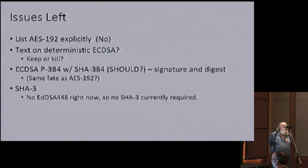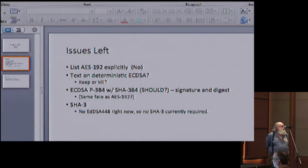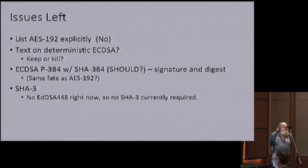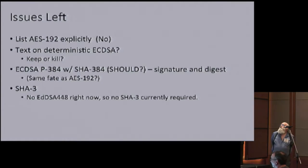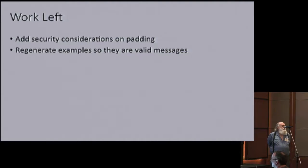The last item is SHA-3. At this point I'm seeing zero real support in the IETF for doing SHA-3 on anything, and I'm perfectly willing to stay with that position for this document. Is there anyone who thinks that's a bad position? Not seeing anyone run to the mic. So from that list, we've got one thing to decide and everything else stays put.